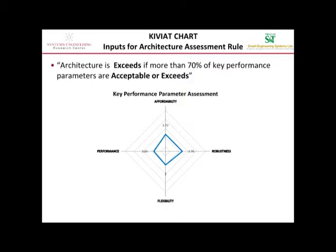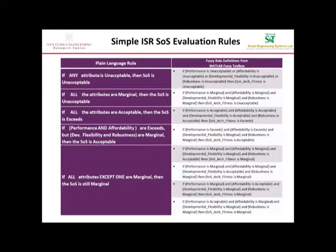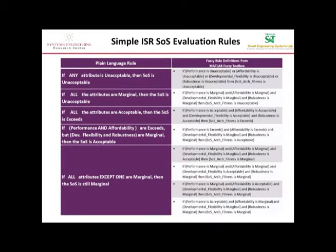An ideal system of systems would have a very large enclosed area, giving you good values out of all the performance attributes. We write fuzzy inference system rules to combine the attributes — this part is very simple. The plain language rules are on the left; you have to spell them out more carefully in MATLAB on the right. So if any attribute is unacceptable, then the whole system of systems is unacceptable. That seems fairly reasonable — if it's completely unacceptable in performance, even if it's very good in affordability, I'm pretty sure I don't want that system of systems.